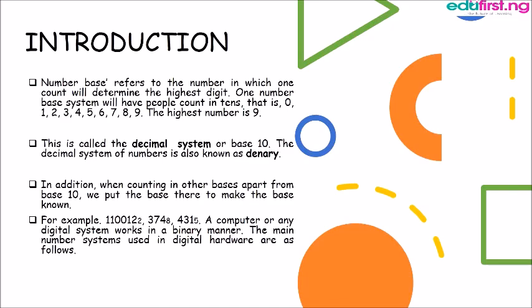This is called the decimal system or base 10. It is also known as denary. Now we have examples of numbers in different bases, that's 11001 in base 2, 374 in base 8 and so on.